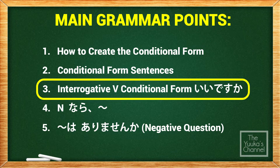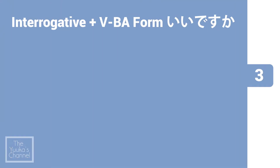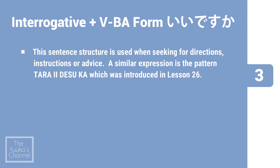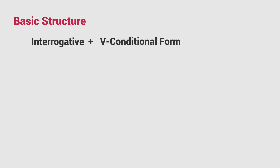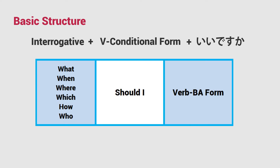Interrogative plus verb in conditional form, ii desu ka. This sentence structure is used when seeking directions, instructions, or advice. A similar expression is the pattern tara ii desu ka, which was introduced in Lesson 26. The basic structure is: interrogative plus verb in ba form plus ii desu ka — or in English: what, when, where, which, how, who should I?